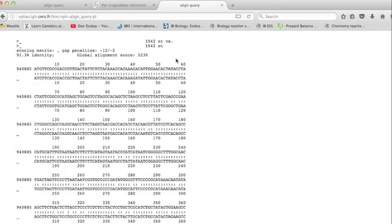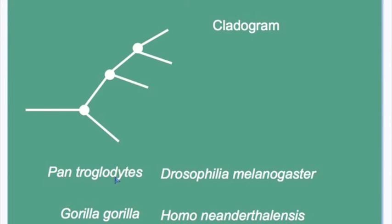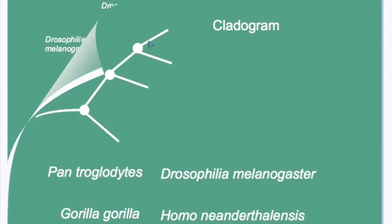You select align and examine the data on the percentage identity. Here you see it's a 91.34% match. In your case, you would be running your analysis as pairs — Pan troglodytes versus Gorilla gorilla, or Pan troglodytes versus Homo neanderthalensis.